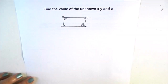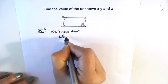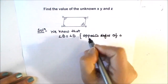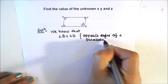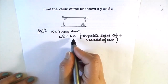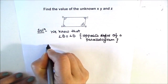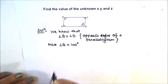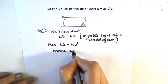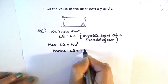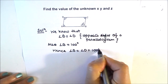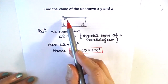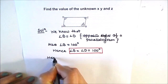Let's start. We know that angle B is equal to angle D, as opposite angles of a parallelogram are equal. Angle B is given as 100 degrees, hence angle B equals angle D equals 100 degrees. So we got our two angles as 100 degrees.